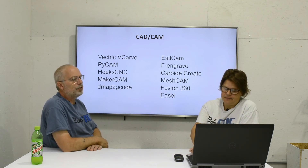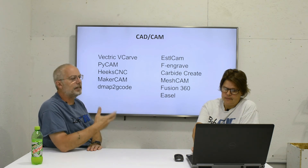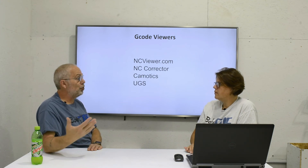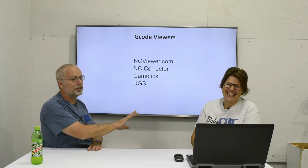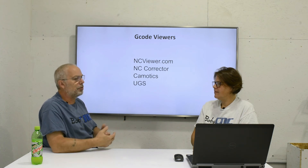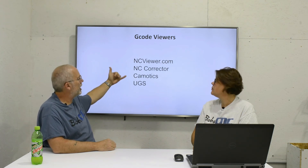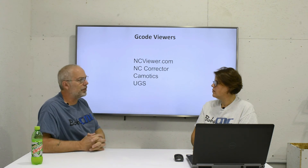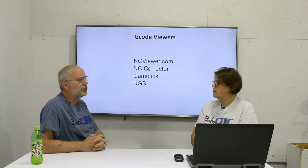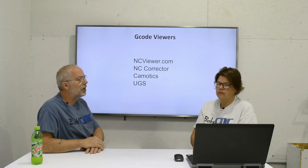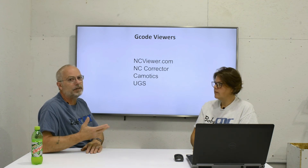Once you make a toolpath, you can explore and even edit it. A toolpath file is really just a text file. If you understand coordinate systems, you can actually write G-code by hand — we have a few videos on that. You can also use NCviewer.com, NC Corrector, or Universal G-code Sender to view your G-code, edit that code, and watch the toolpaths move around on screen to see exactly what it's doing.